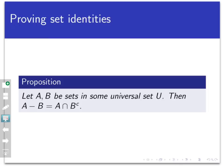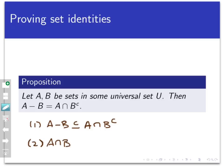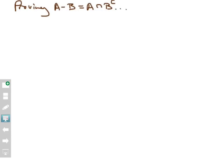Let's set up a proof. We'll let A and B be sets in some universal set U, and prove that A minus B equals A intersect B complement. Since this is a proposition about two sets being equal, it involves two steps. First, I'll prove that A minus B is a subset of A intersect B complement. Then I'll prove the other direction: that A intersect B complement is a subset of A minus B. So let's first show that A minus B is a subset of A intersect B complement.